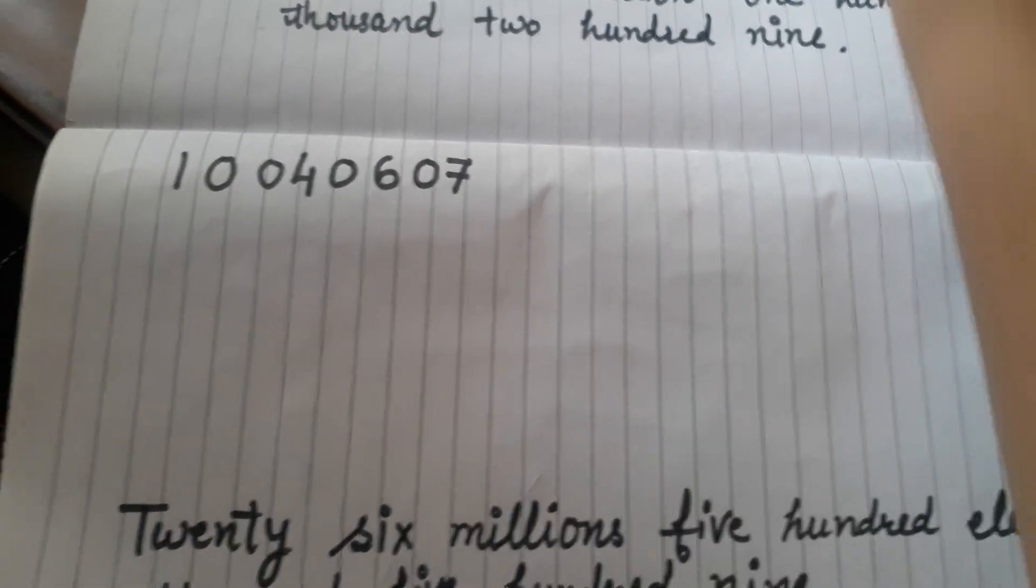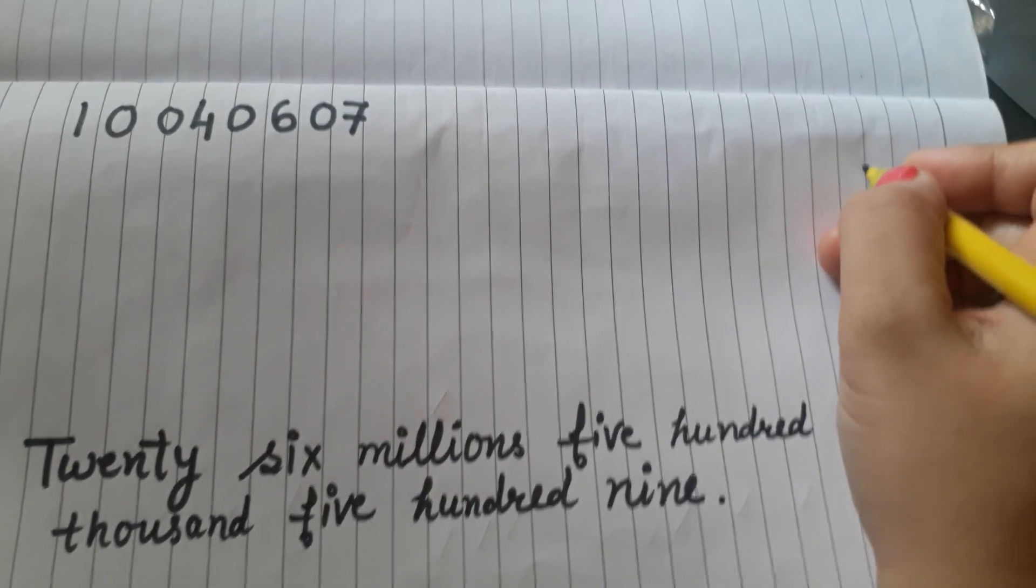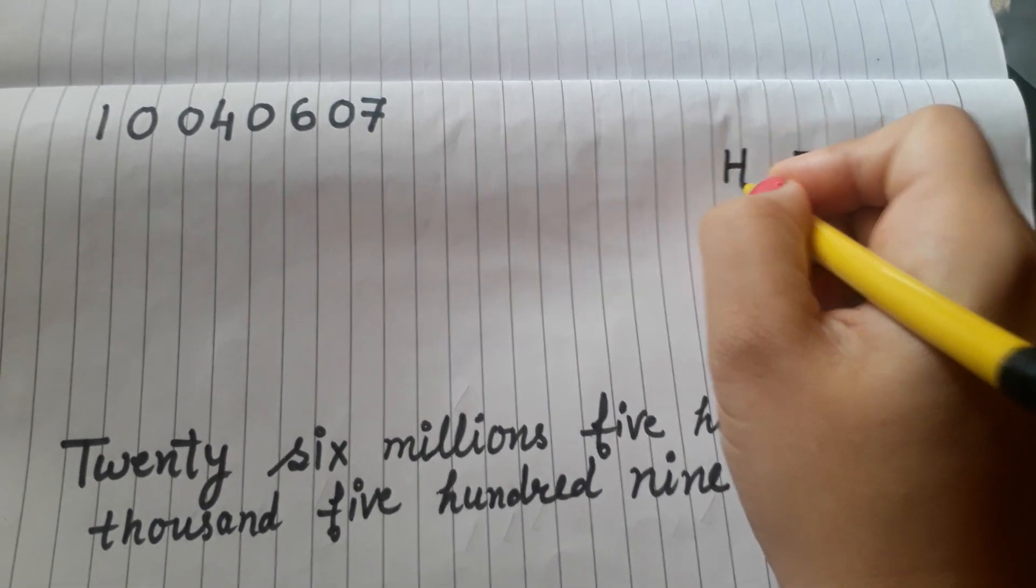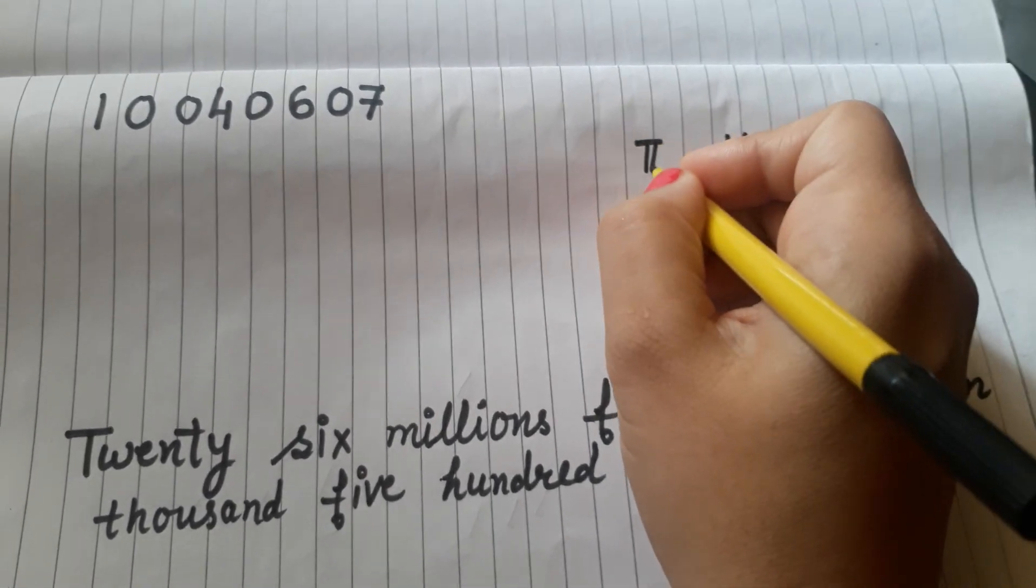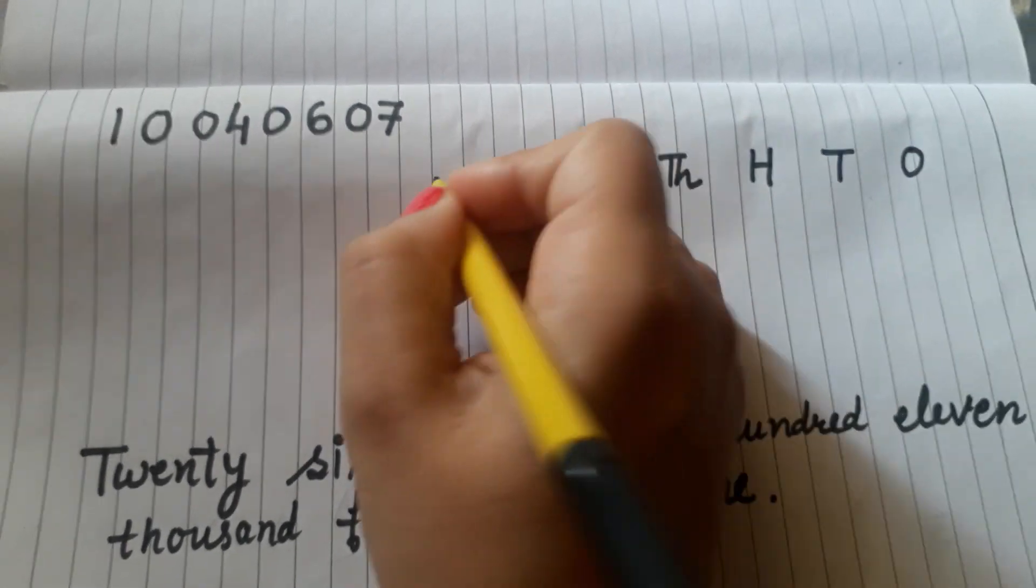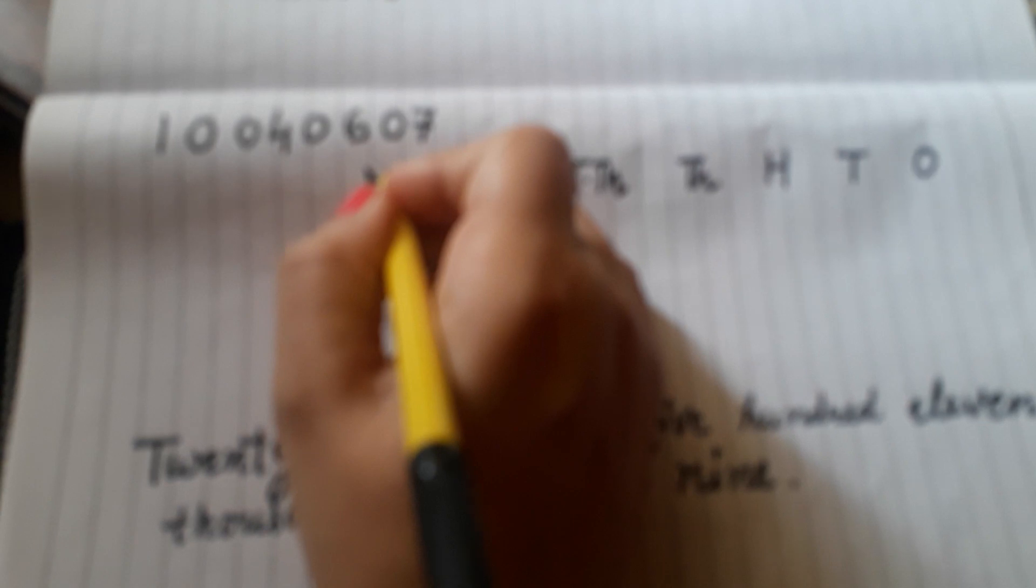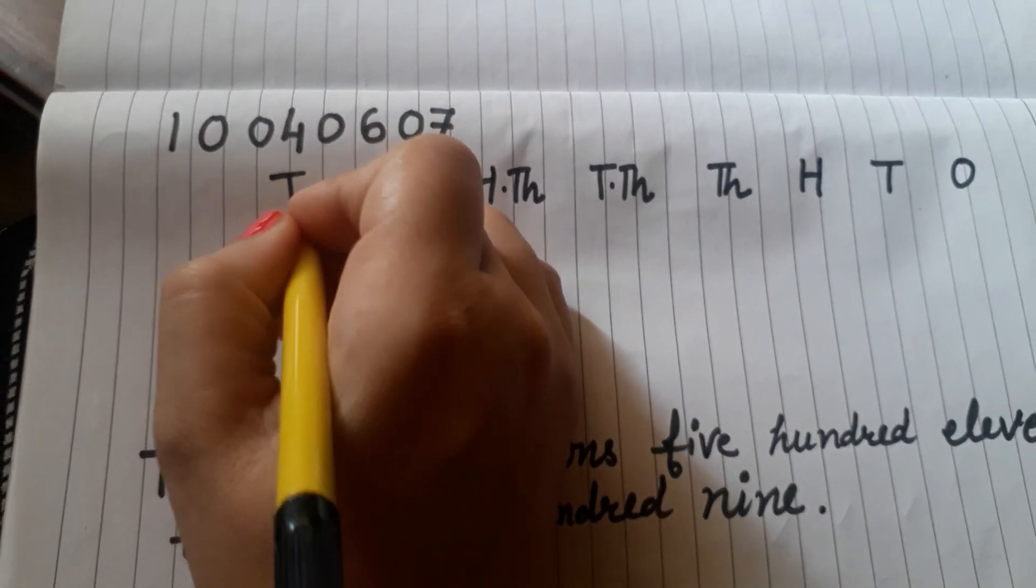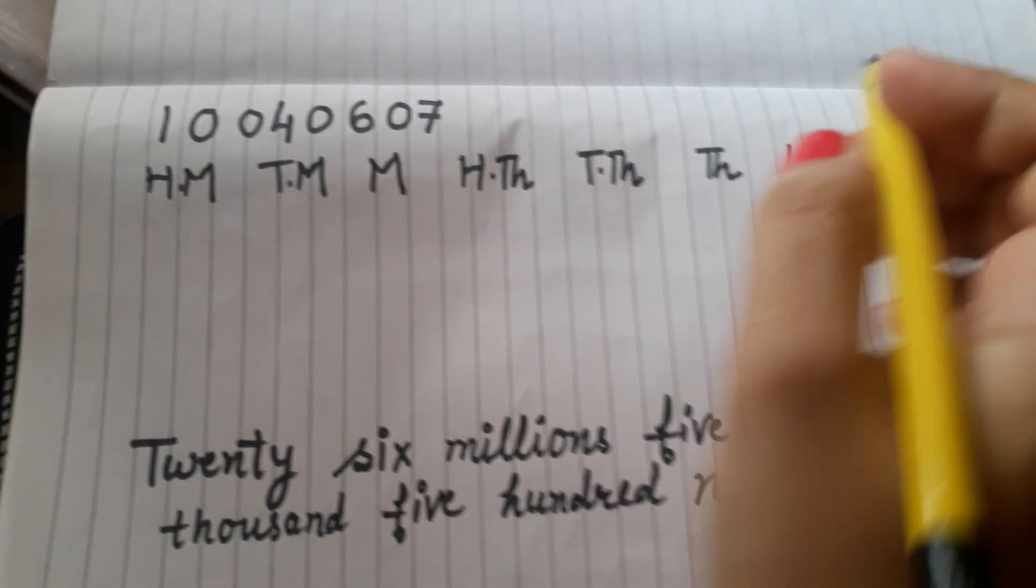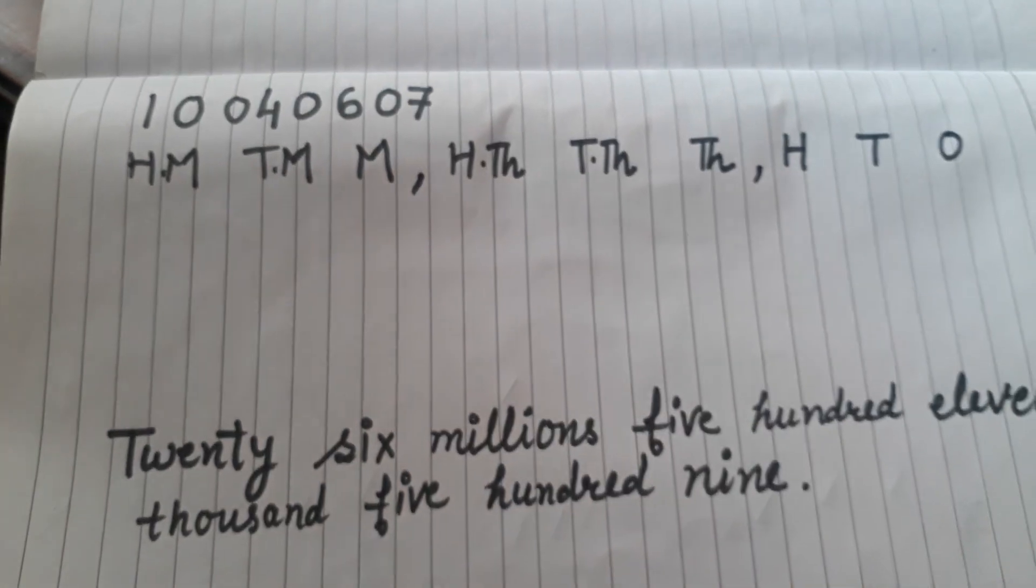Now the next example: 10040607. Let's start. Ones, tens, hundreds, thousands, ten thousands, hundred thousands, million, ten million and hundred million. We will put commas now.